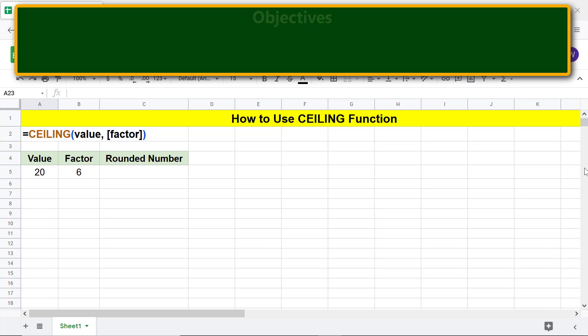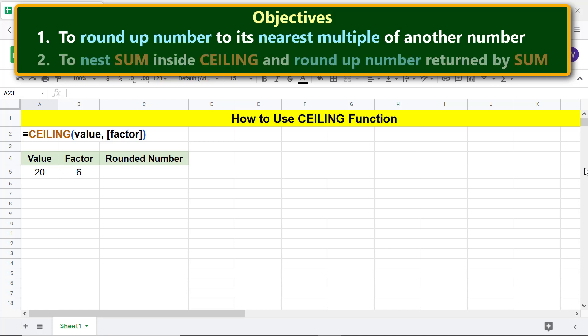All right, here are the two objectives of using the CEILING function: to round up a number to its nearest multiple of another number, and to nest SUM inside CEILING and round up the number returned by SUM.